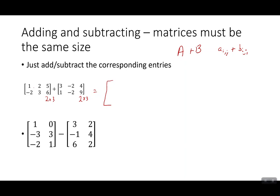We can just add the corresponding pieces in there. So I'm going to add 2 plus 3 gives me 4. The 2 plus -2 adds to 0. 5 plus 4 is 9. -2 plus 1 is -1. 3 plus -2 is positive 1. And 6 plus 9 is 15. And so for each individual component, we just add them together.